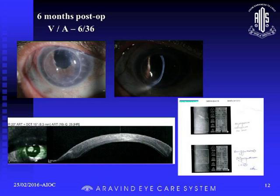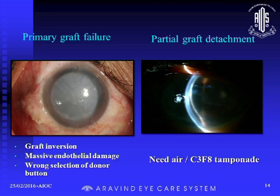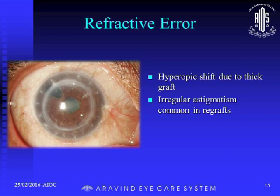In the immediate post-operative period, the problems will again be maintaining the graft in place properly. In the late stages, it will be similar to PK: graft rejection, refractive errors, or infection. In the immediate period, it may be primary failure where you have to replace the graft, or it may be graft displacement or dislocation — then you may have to re-bubble the graft. Refractive error can be expected because of a very thick graft, hyperopic shift, or if doing a re-graft where the previous cornea has a lot of irregular astigmatism. You have to plan properly in these cases.